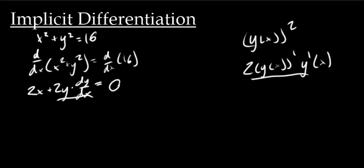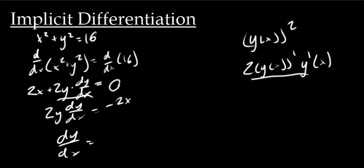Now that we have 2x plus 2y dy/dx equals zero, we can solve for dy/dx. Subtract 2x from both sides to get 2y dy/dx equals negative 2x, then divide by 2y and we get dy/dx is equal to negative x over y. Now let's look at another example.